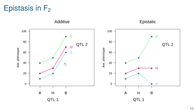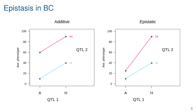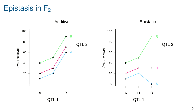However, sometimes no transformation can restore the parallelism. Some people view this kind of interaction — which cannot be restored by any transformation — as fundamentally different from the kind where a transformation could make them parallel again. But the key thing with interactions is it's just like interactions between other covariates.